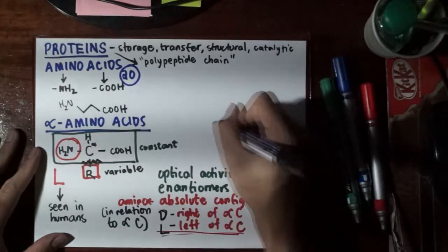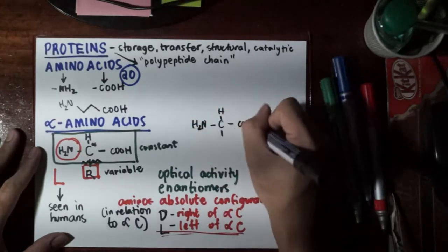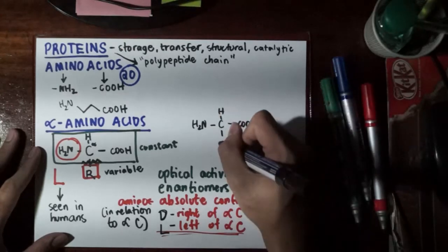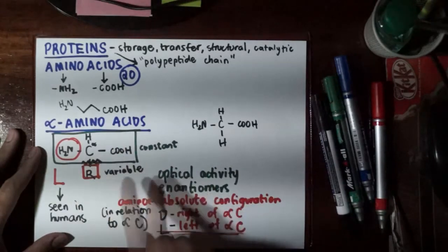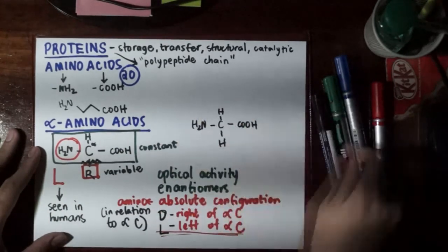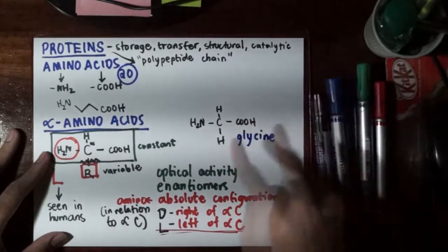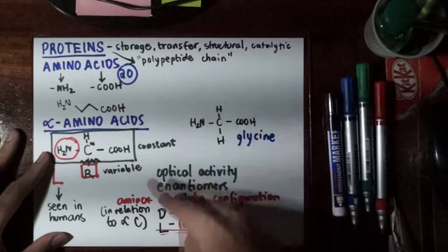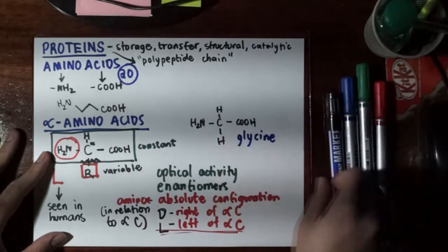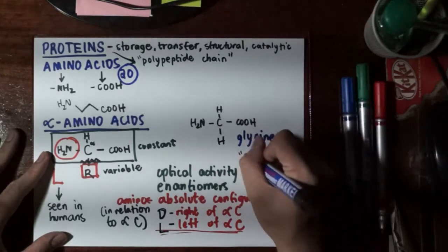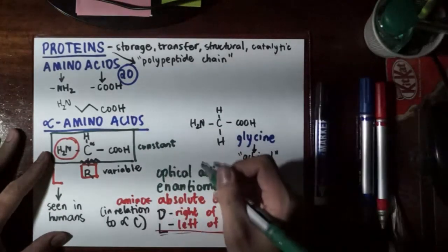Unless the R group becomes H, which is the first amino acid—unless the R group is also H—it will always have L or D isomers. But in case of this one, the name of this guy is glycine. Since we have two hydrogens here, we cannot anymore assign D or L configurations because there won't be such.